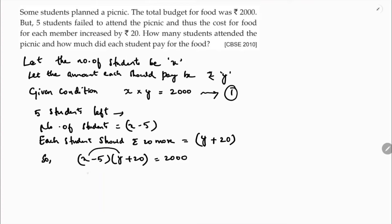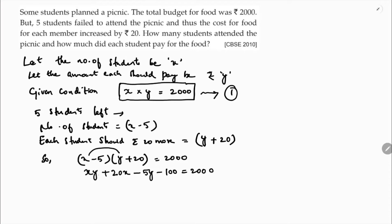Now if we expand this: xy + 20x − 5y − 100 = 2000. From equation one, xy = 2000, so we can substitute and cancel, leaving 20x − 5y − 100 = 0.